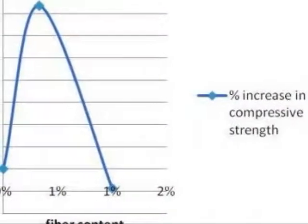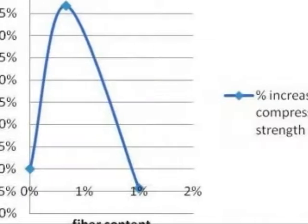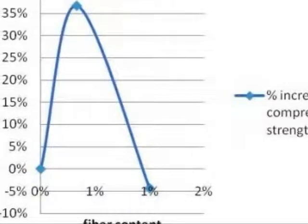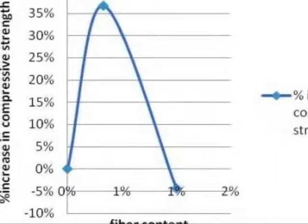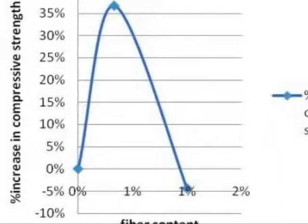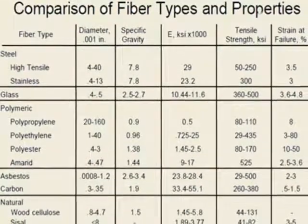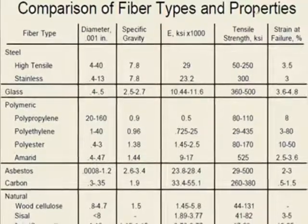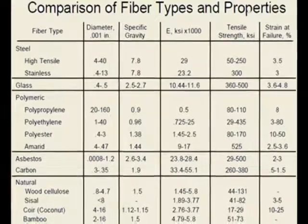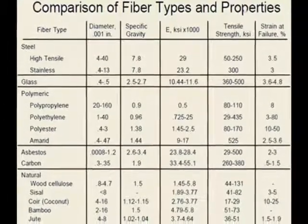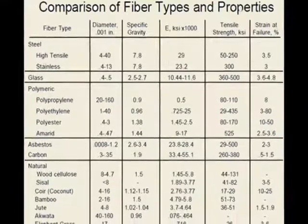The amount of fibers added to a concrete mix is expressed as a percentage of the total volume of the composite, termed volume fraction, or VF. Volume fraction typically ranges from 1% to 3%. The fibers help carry the load by increasing the tensile strength of the material. Increasing the aspect ratio of the fiber usually increases the strength and toughness of the concrete. However, fibers that are too long tend to ball up in the mixture, creating pumpability and workability problems.